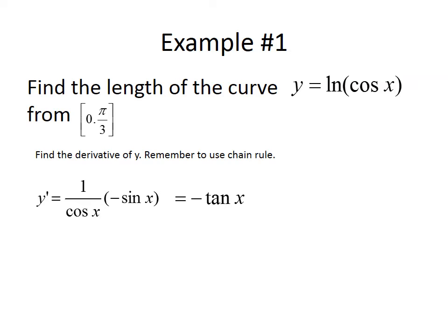So now all we have to do is just integrate that from 0 to pi over 3, the square root of 1 plus negative tan x squared. I just simply use my calculator to get the answer of 1.317. Now, remember, in calculus, we always round to three places behind the decimal. Please don't miss that on the AP exam.